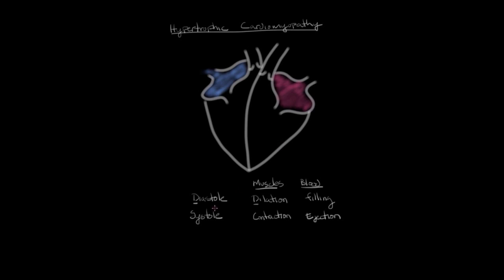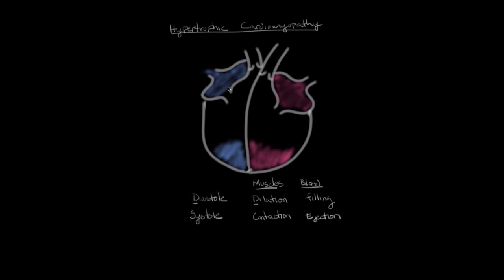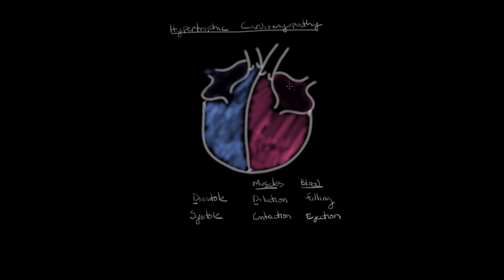The first stage of the cardiac cycle is diastole. As the muscles of the ventricles dilate, it draws blood from the atria into the ventricles, causing filling of the ventricles. The atria have now emptied all of their blood and the ventricles are filled — that's diastole.